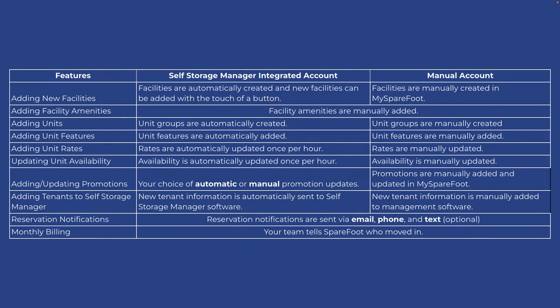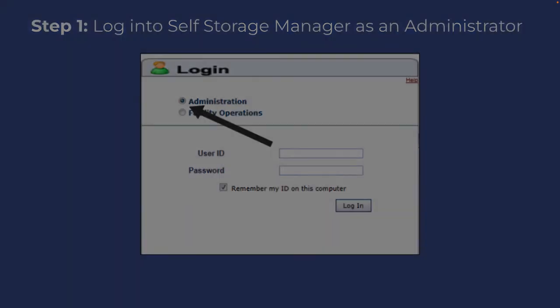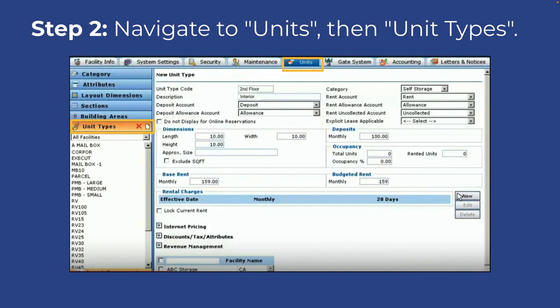To view and edit your units in Self Storage Manager, follow these steps. Step 1: Log into Self Storage Manager as an administrator. Step 2: Navigate to Units, then Unit Types.